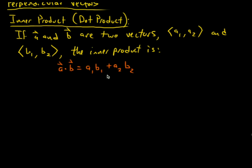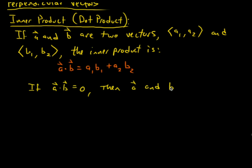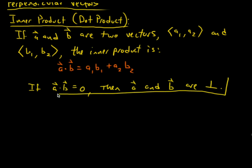This reminds me of the determinant back when we did matrices — how the determinant was just a particular number. There's a fact about the dot product: if a dot b equals zero, then the vectors are perpendicular — I'll abbreviate with the perpendicular symbol, which looks like an upside-down capital T. So this ends up serving as a test to determine the perpendicularity of vectors, specifically in a plane.